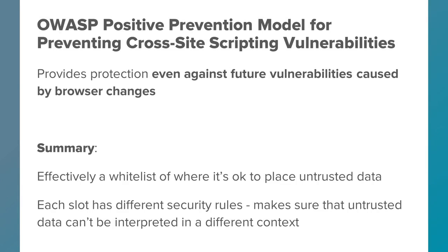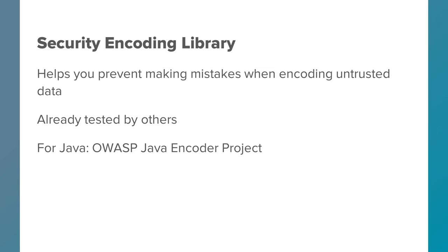This positive prevention model gives us a way to add even further mitigations against future vulnerabilities that could be caused by changes in the browser. To sum it up, it's effectively a whitelist for where it's okay to place untrusted data if you need to do that. Each of these slots has different security rules to make sure that the untrusted data can't be interpreted in a different way.